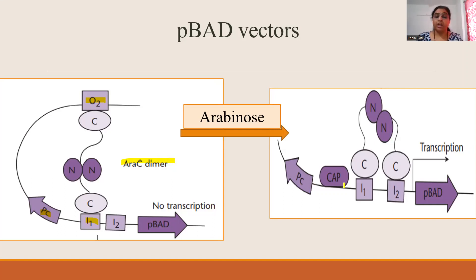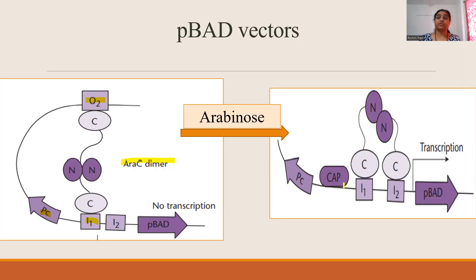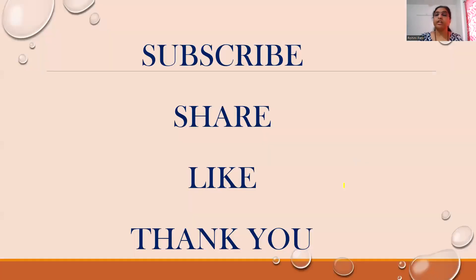I think you have now understood the idea about the pBAD system, the lambda PL system, and the pET vectors — how regulated promoters are used for regulated expression of genes. If you have any doubts or comments, write in the comment box. If you like this video, please subscribe to my channel and share my videos with your friends so the knowledge spreads. Thank you.